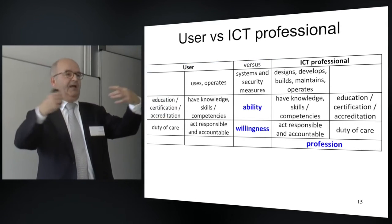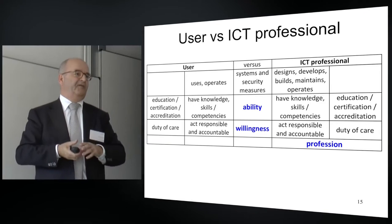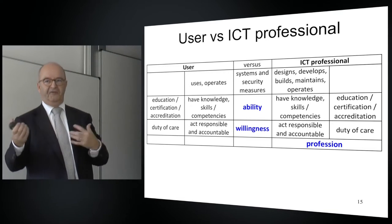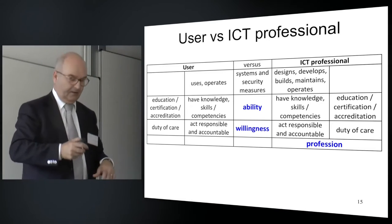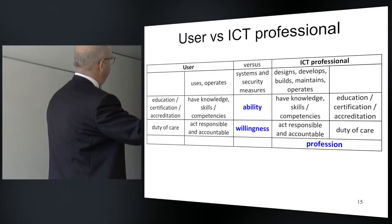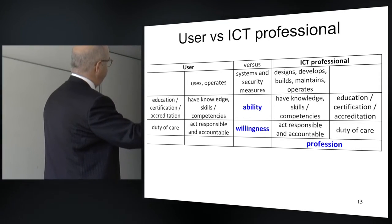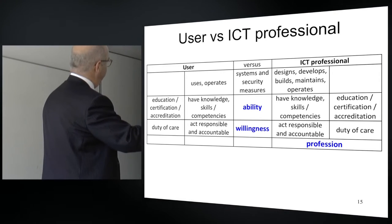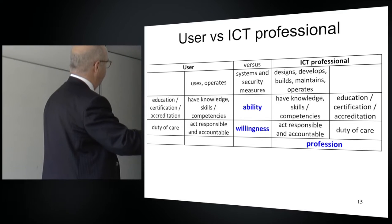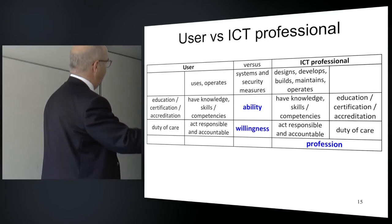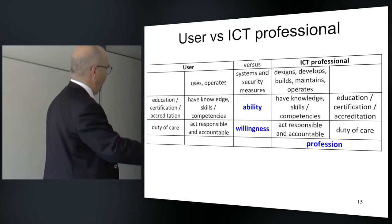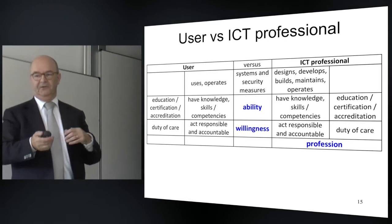When thinking about this speech, I thought: how can I explain why I want to emphasize the ICT professional compared to the user? Working on that, I got into a little trouble, because basically the difference is not that big. Users use and operate systems and security measures. Professionals design, develop, build, and maintain them. Both need knowledge, skills, and competencies provided by education, certification, and accreditation. There needs to be a willingness to act responsibly and accountably — applicable to both groups.